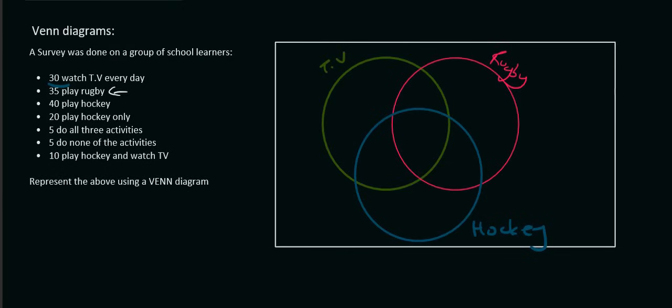Next one, 35 play rugby. That does not mean 35 goes there. We don't know exactly where that 35, because this one plus this one plus this one plus this one should give us 35. So we can't do anything with that just yet. 40 play hockey, we can't do anything.